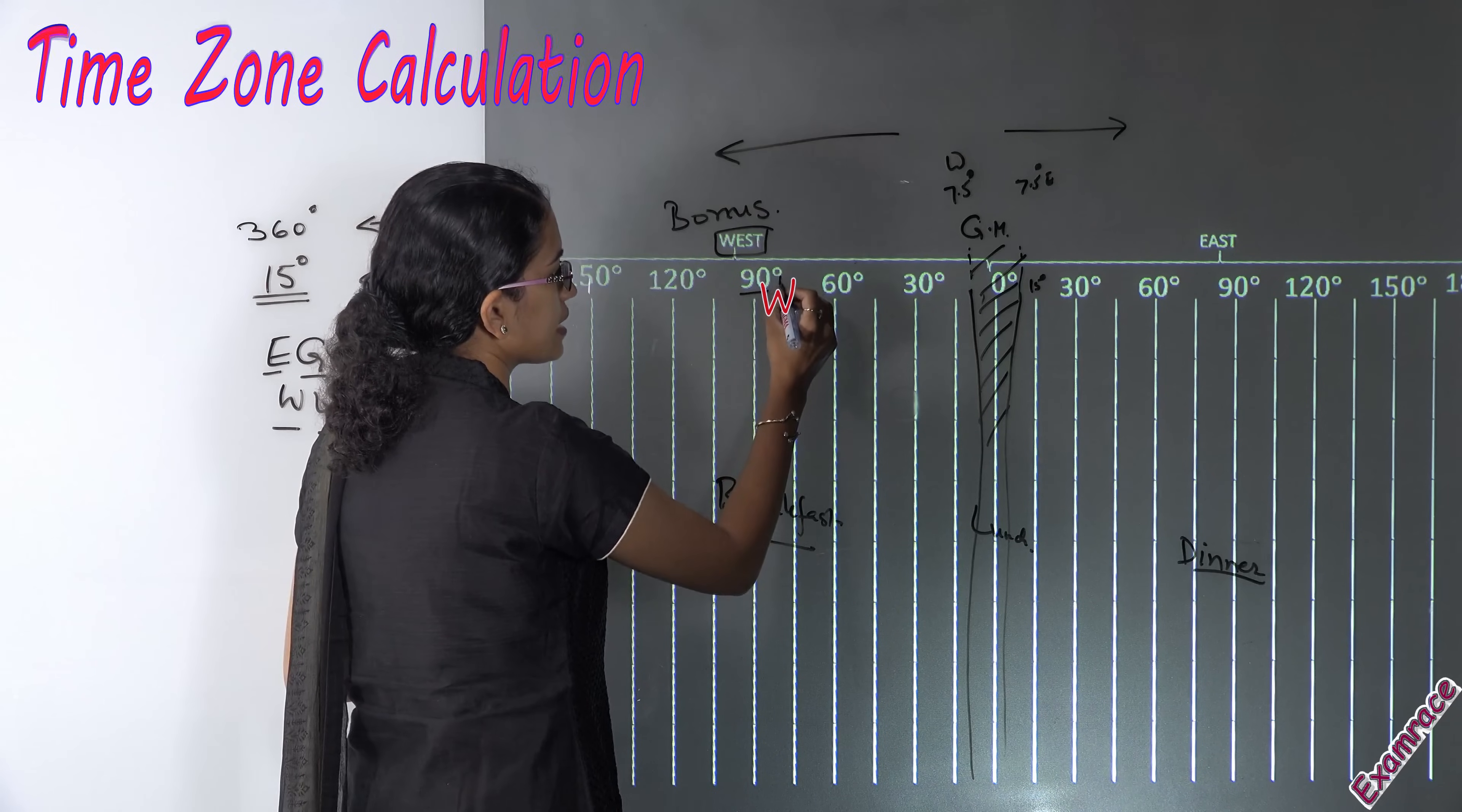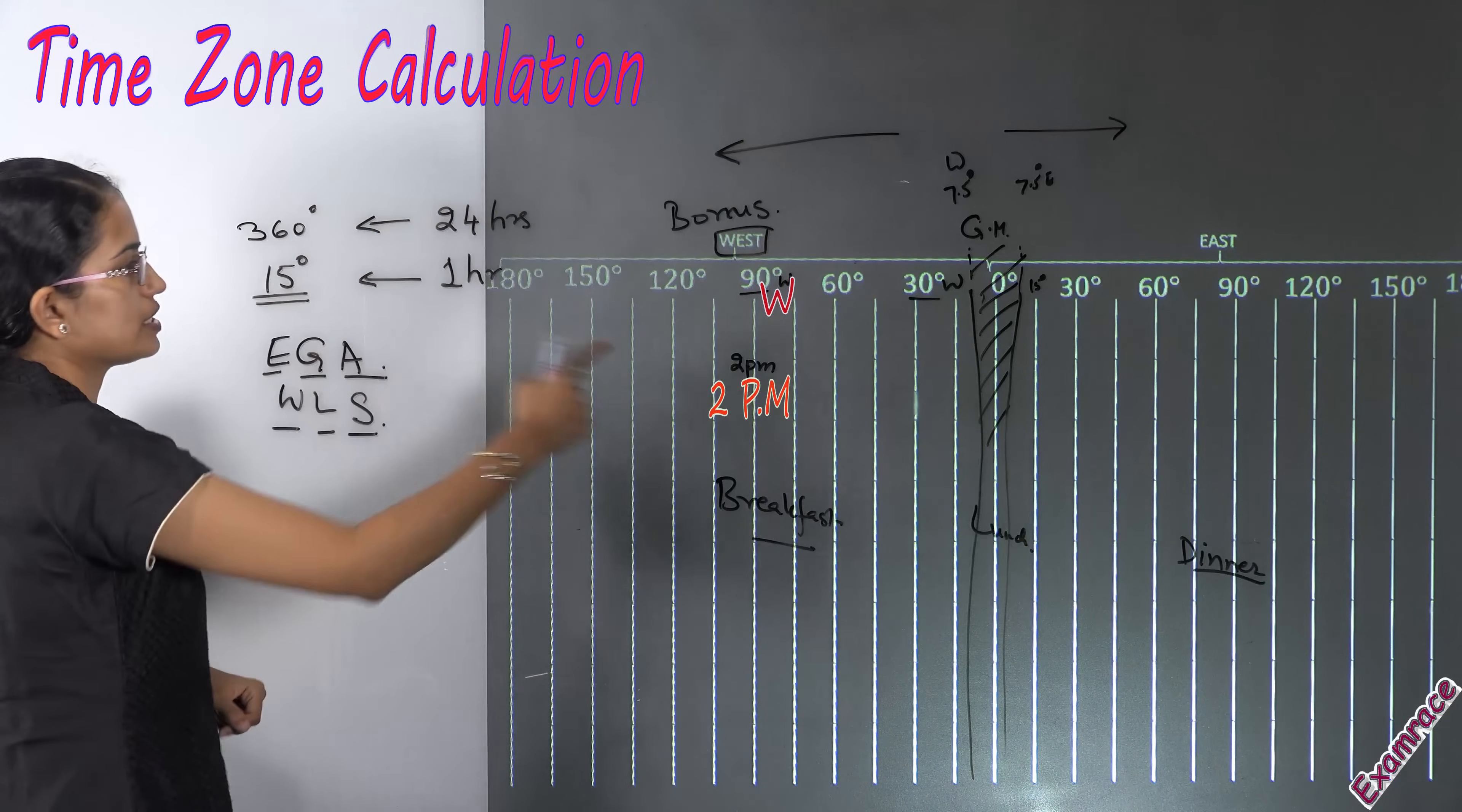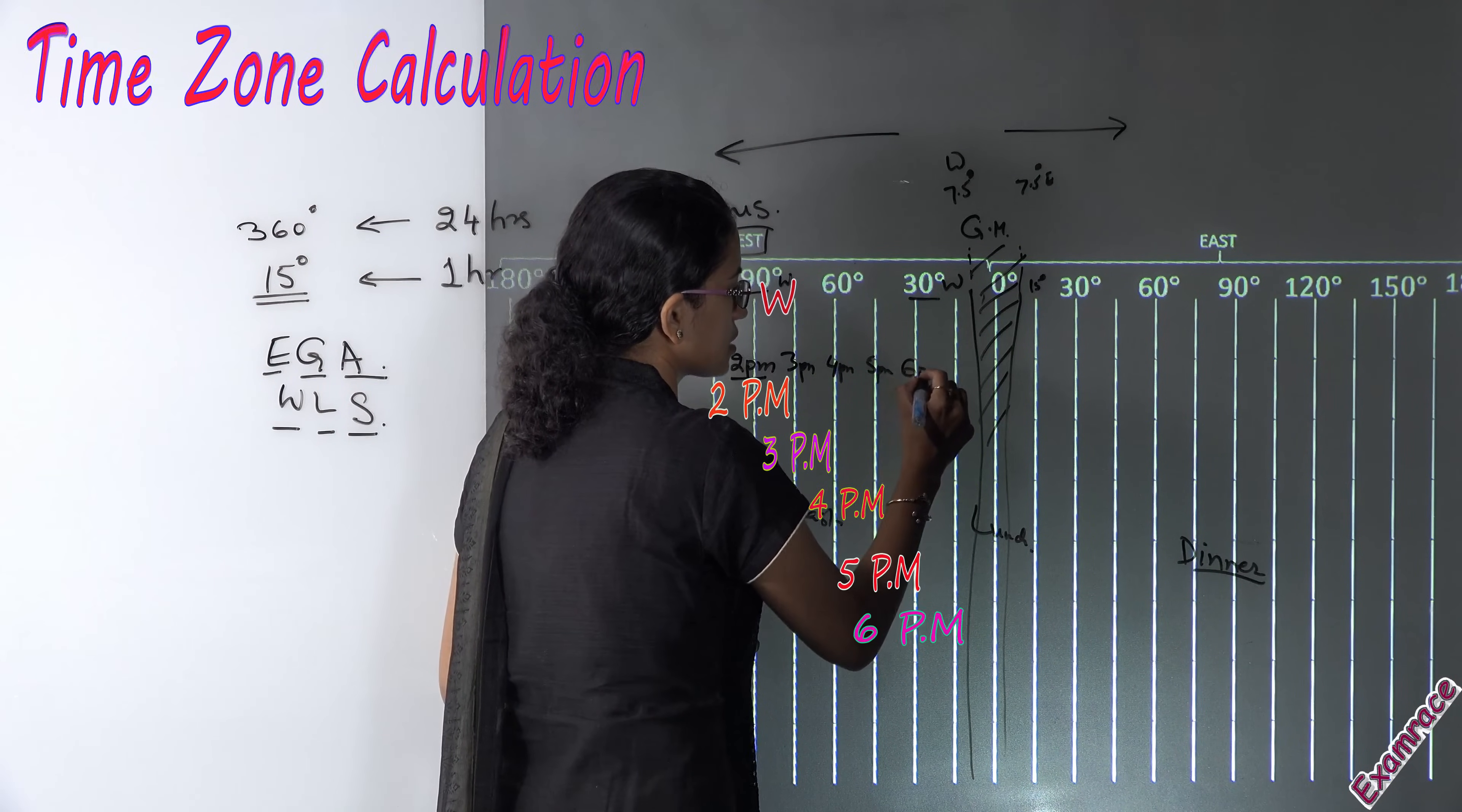Let's say a person is on 90 degrees west. The time here is 2 PM. He tends to move to 30 degrees west. What would be the time there? With every line there is one hour change because each line denotes 15 degrees in this diagram. So from 2 PM we are moving towards east, so we are gaining and adding time. So it would become 3 PM, 4 PM, 5 PM and 6 PM.